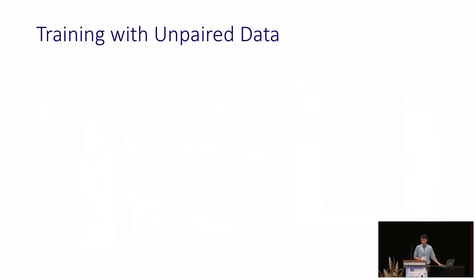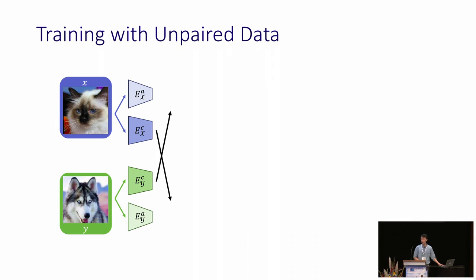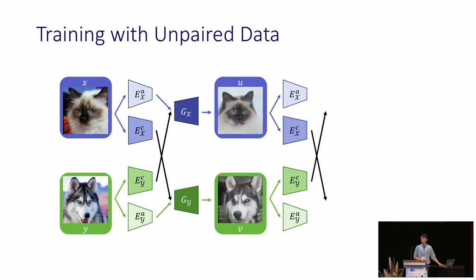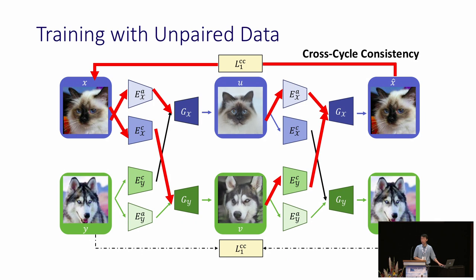How can we train the model with unpaired data with the help of disentangled representations? Given two unpaired images, we encode them into content and attribute features. Since the content space is shared between two domains, we can swap the content features and perform the first translation. The translated result U should contain Y-content and X-style, while V should contain X-content and Y-style. We then encode, swap, and perform a second translation, whose result should reconstruct the original images. We call this cross-cycle consistency.